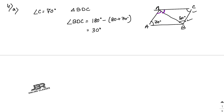So angle BDC = 30°. Now since DC is parallel to AB and BD is the transversal, angle ADB = angle DBC = 80° (alternate angles). Therefore angle ADB = 80°.